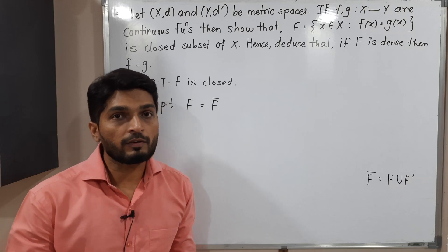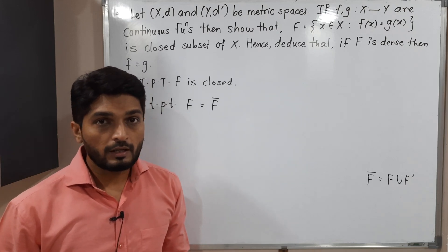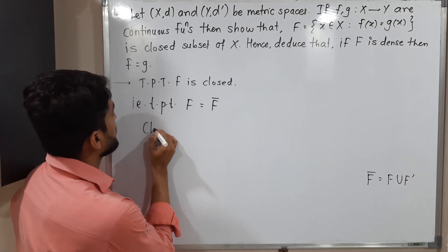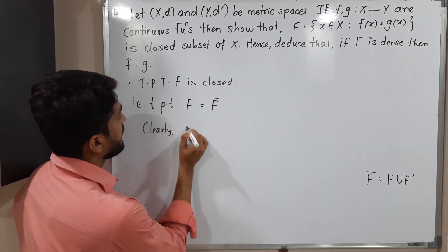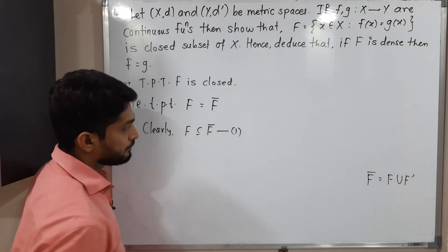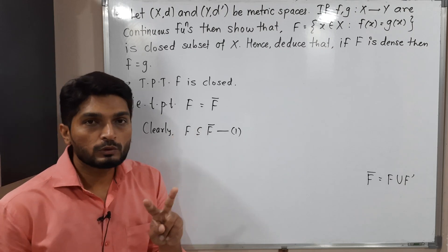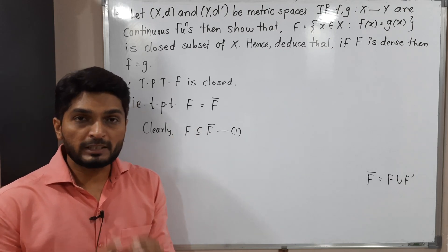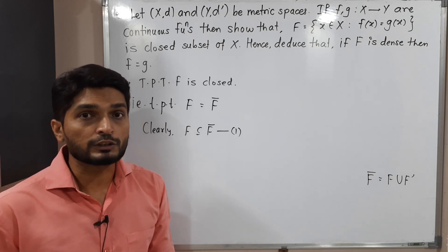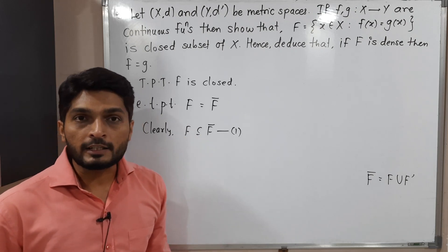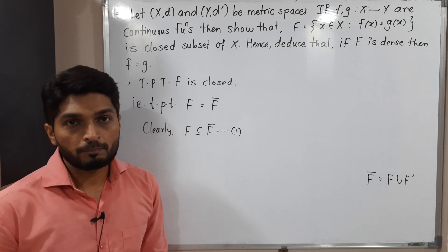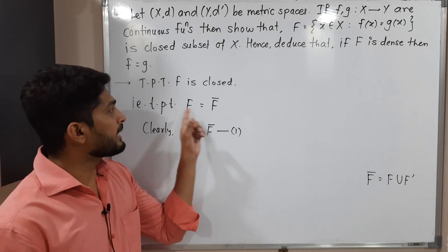Clearly by definition, F is a subset of F̄. Let us call this statement (1). Since we want to prove these two sets are equal, the best way is to prove each is a subset of the other. So half the work is done — we have proved F ⊆ F̄ directly by definition. Now let us prove that F̄ ⊆ F.